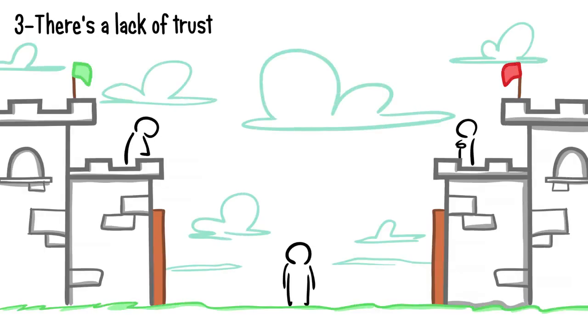Number three: There's a lack of trust. Vulnerability is the key ingredient to establishing a strong connection. But when someone secretly dislikes you, they will be suspicious of your intentions, even if they're good.